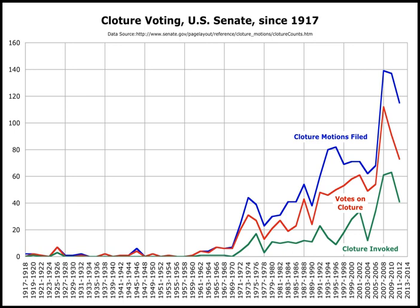A filibuster in the United States Senate is a dilatory or obstructive tactic used to prevent a measure from being brought to a vote. The most common form of filibuster occurs when one or more Senators attempts to delay or block a vote on a bill by extending debate on the measure.